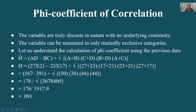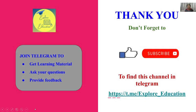Phi के लिए conditions: variables are truly discrete in nature with no underlying continuity, and variables can be measured in only mutually exclusive categories। Formula: phi = (AD − BC) / √[(A+B)(C+D)(B+D)(A+C)]। इसका मान आएगा जैसे 0.091।